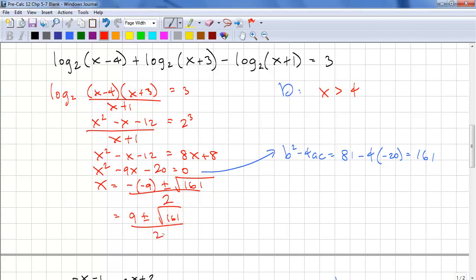And we need to check for extraneous values. This is roughly 12, it's between 12 and 13. 12² = 144, 13² = 169, so it's slightly closer to 169, so it's almost 13. 9 - 13 is going to be negative, so that's outside the domain.